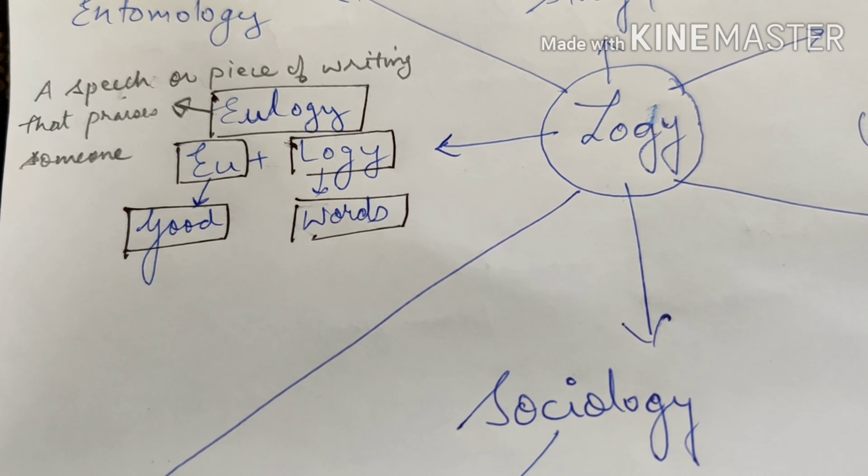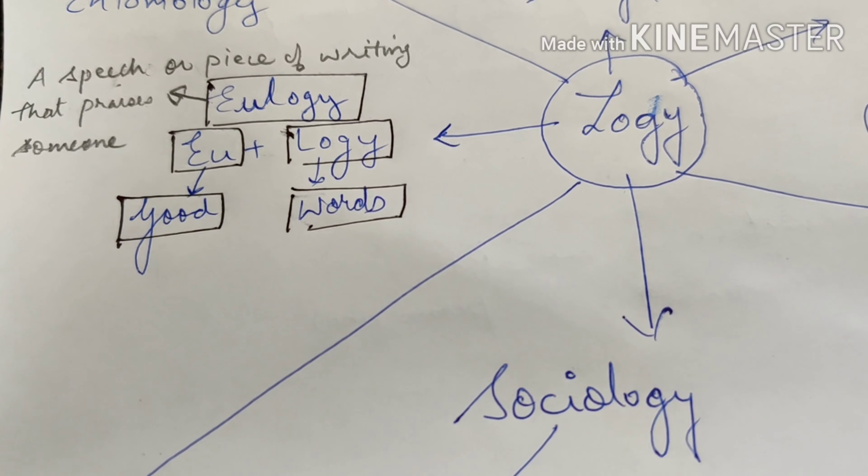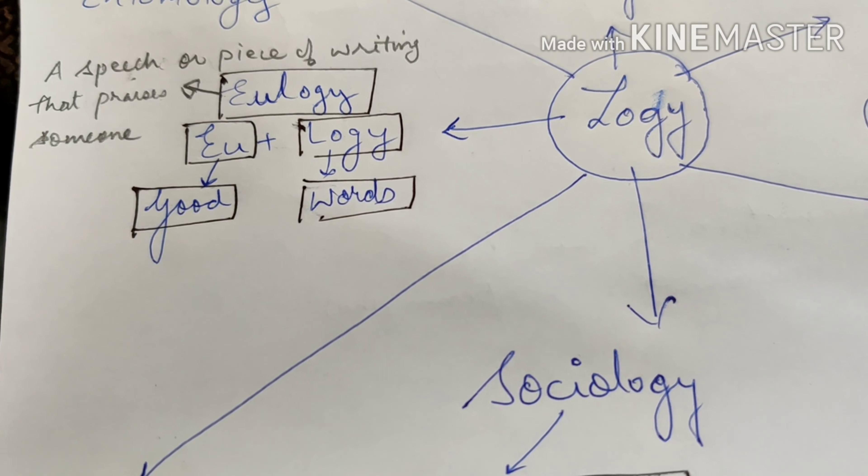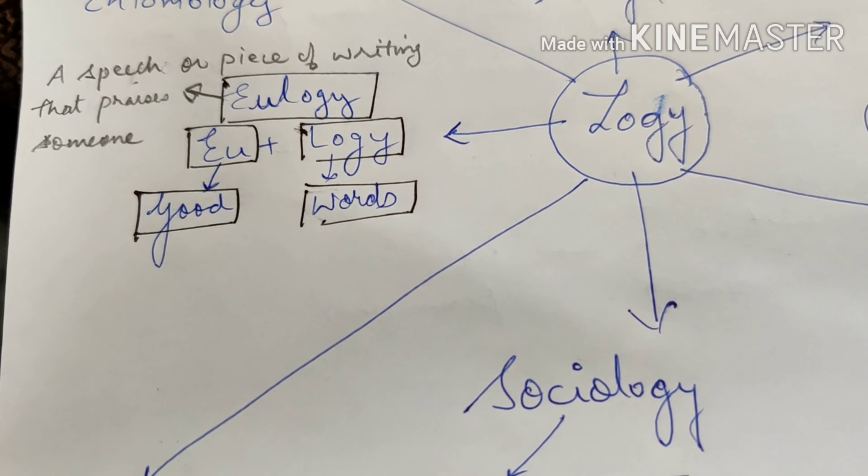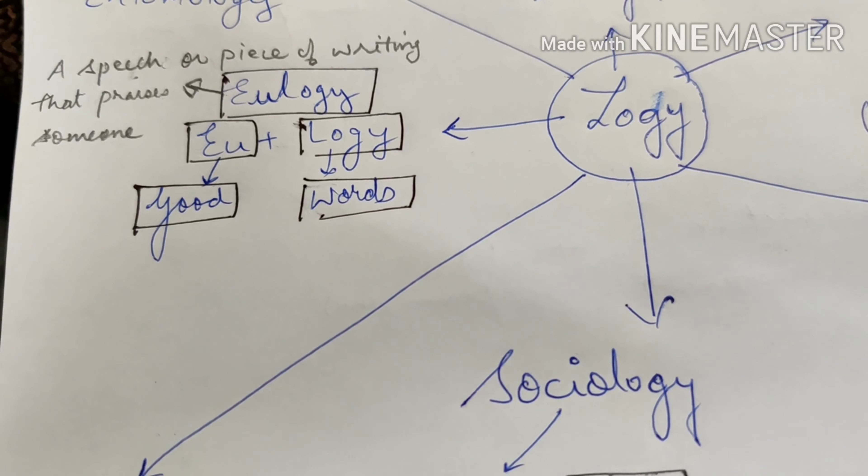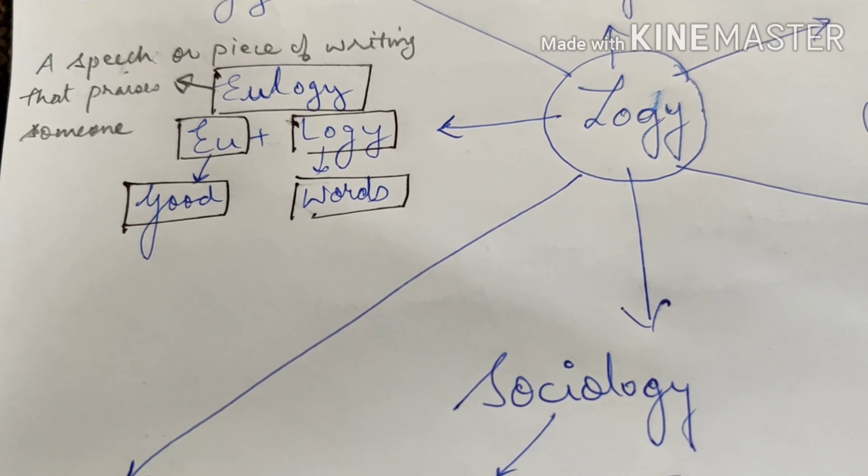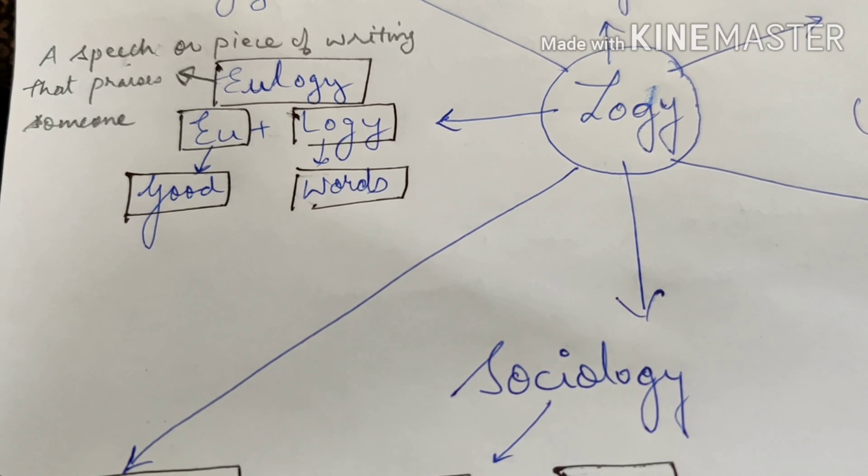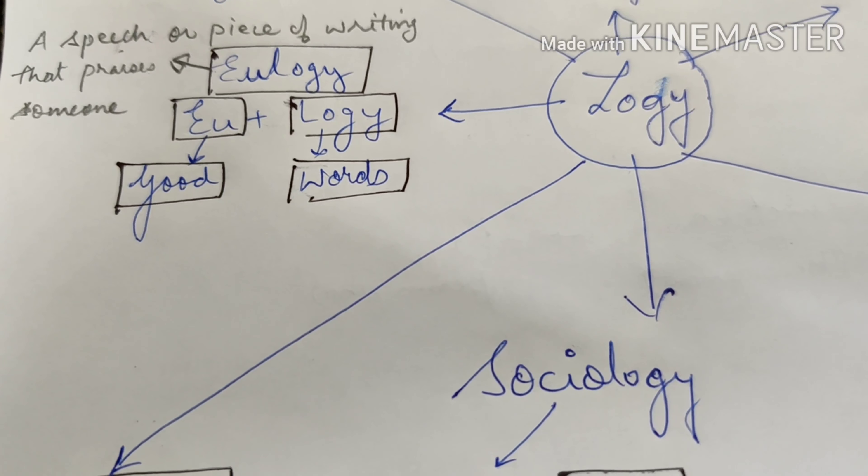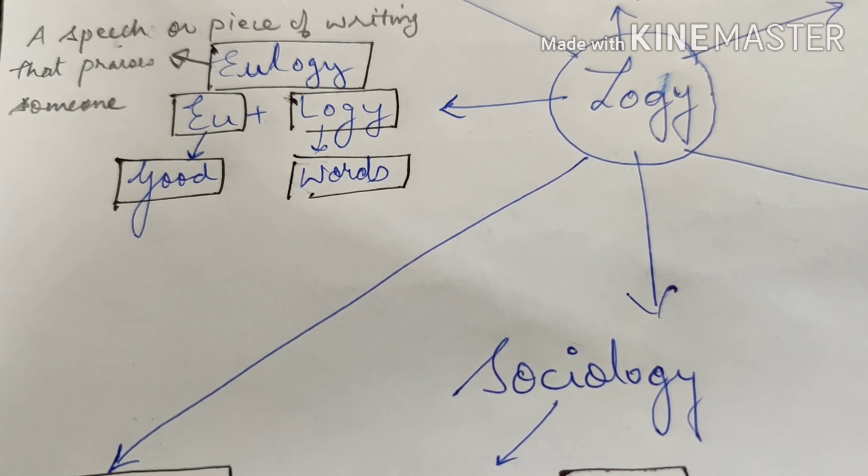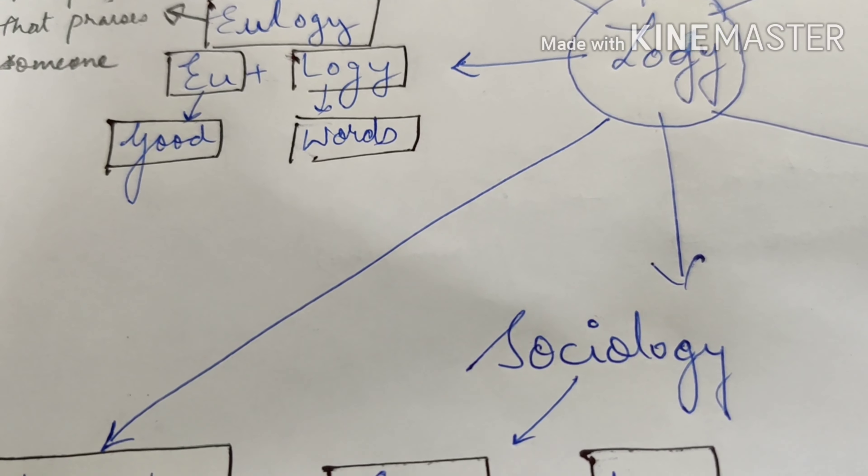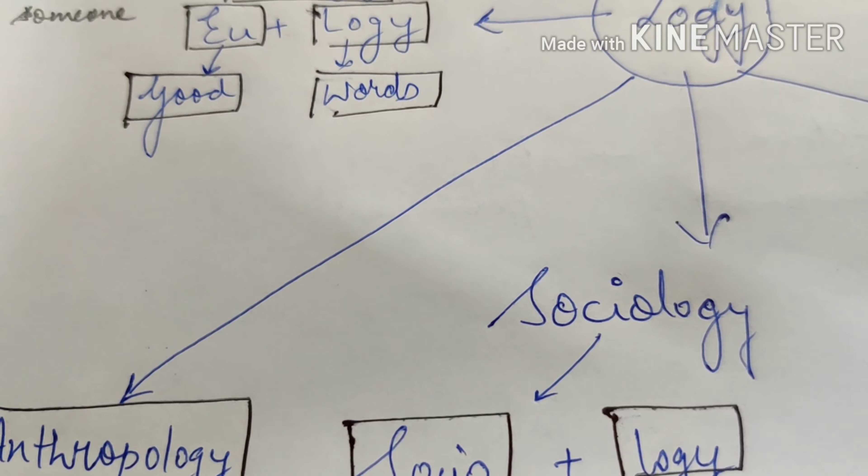Next word is eulogy. Eulogy comes down to root words as eu, you that is good and logi that is words. Eulogy refers to speech or piece of writing that praises someone. So basically eulogy refers to good words. Good words for someone by using them in a speech or by writing them. Most often eulogy is a tribute which is paid to somebody who has already passed away.